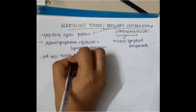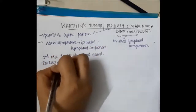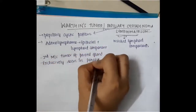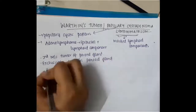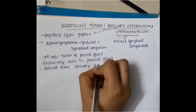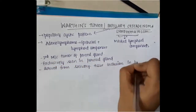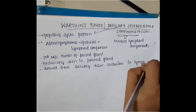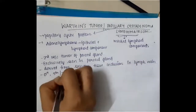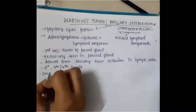Warthin's tumor is the second most common tumor of the parotid gland and is exclusively seen in the parotid gland. It is mainly derived from cervical tissue inclusions in the lymph nodes — if there is any cervical tissue inclusion in the lymph nodes, the tumor develops from that.